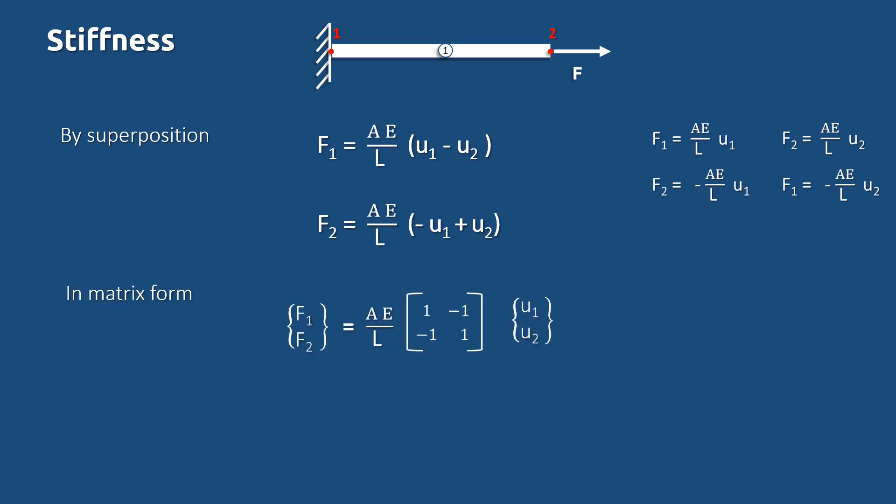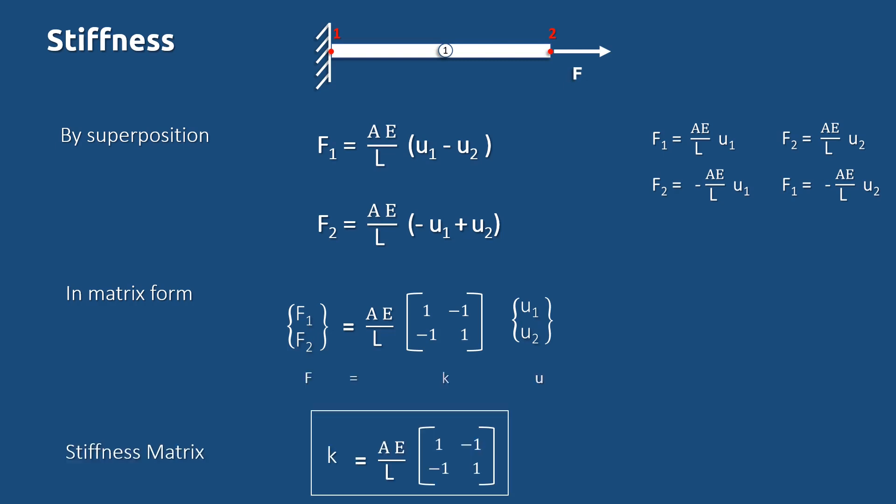Rewriting these expressions in matrix form, we get: the column matrix [F1, F2] equals (AE/L) times the matrix [1, -1; -1, 1] times the displacement vector [U1, U2]. This is in the form of F equals a constant K times U. So the stiffness K equals (AE/L) times [1, -1; -1, 1]. This matrix representation of stiffness is called the stiffness matrix, and this form is used in finite element analysis when more elements are involved.